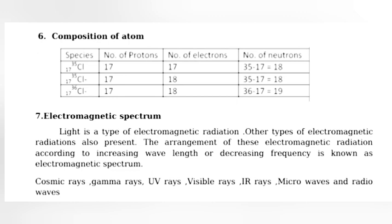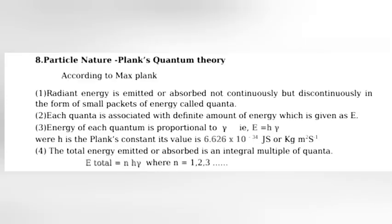Electromagnetic spectrum: Light is a type of electromagnetic radiation. Other types of electromagnetic radiations also present. The arrangement of these electromagnetic radiations according to increasing wavelength or decreasing frequency is known as electromagnetic spectrum. Cosmic rays, gamma rays, UV rays, visible rays, IR rays, microwaves and radio waves.